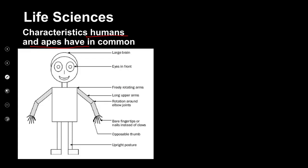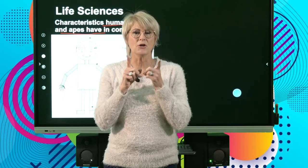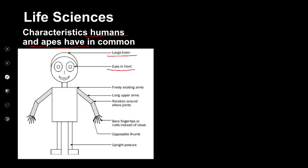Now let's look at the characteristics that humans and apes have in common. You can work from the top of your body down — it's quite important and frequently asked in exams. Starting at the head: we have a large brain, much larger than other animals. Another feature we have in common is eyes in front — our eyes face forward. When we studied the eye, we learned this gives us stereoscopic or binocular vision, which allows 3D or depth perception, so you're able to perceive depth and distance.